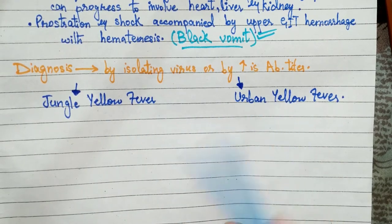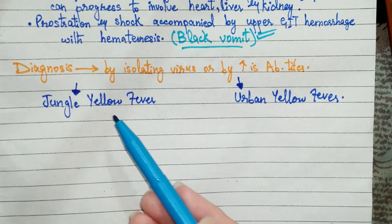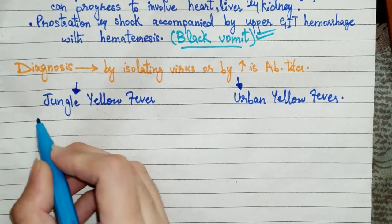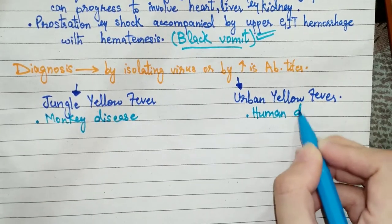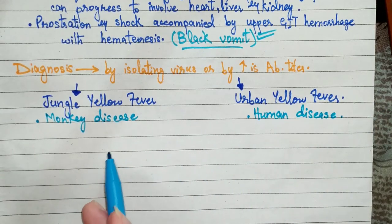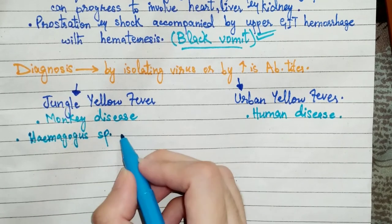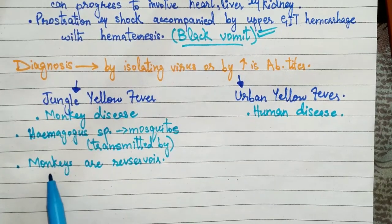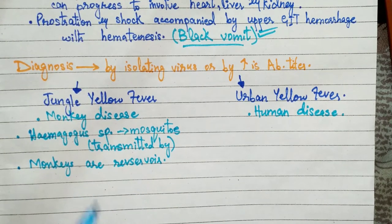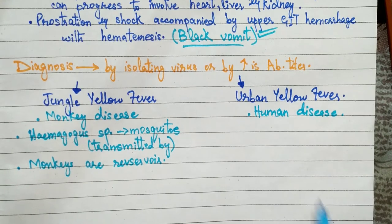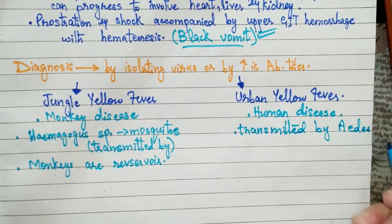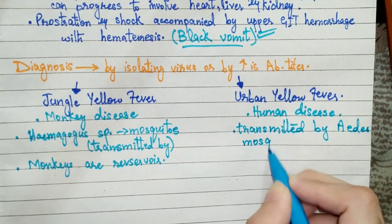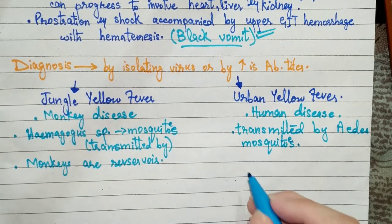Yellow fever is differentiated into jungle yellow fever and urban yellow fever. In jungle yellow fever, monkeys are the reservoir and it is primarily transmitted by Haemagogus species mosquitoes. Humans can be accidental hosts — particularly occupational tree cutters who go into the jungle. In urban yellow fever, it is a human disease transmitted by Aedes mosquito — the same mosquito that transmits dengue virus — and here humans are the reservoir.